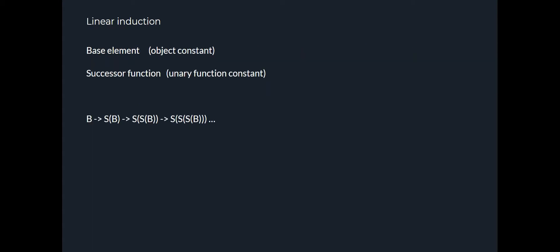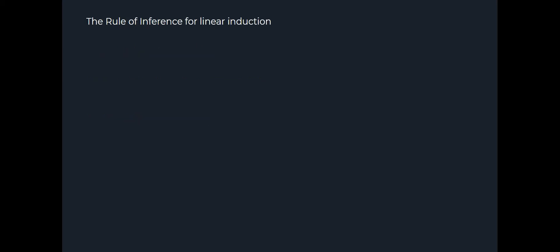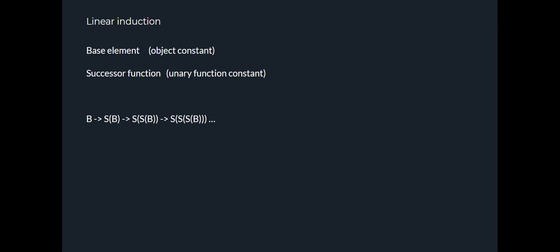So there's different kinds of induction. The most basic is called linear induction, which involves a base element and a successor function with a unary function constant in our Herbrand logic. And we are going to find that the base element, if we call it b, entails s(b), entails s(s(b)), entails s(s(s(b))), and so on. So that we can prove that for every element of our Herbrand base, if this is our Herbrand base, then every single element of the Herbrand base as expressed here evaluates to true.